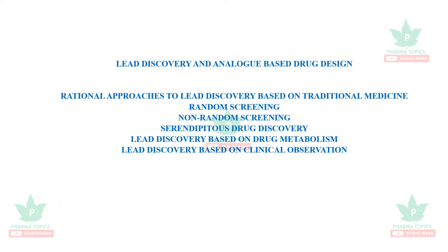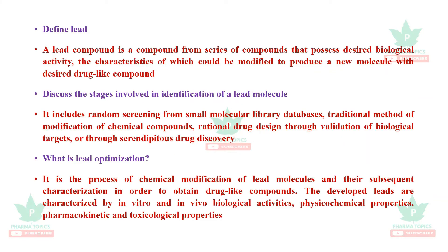The next stage in Unit One is lead discovery and analog-based drug design. This involves subdivisions such as rational approaches to lead discovery, traditional medicine, random screening, non-random screening, serendipitous drug discovery, lead discovery based on drug metabolism, and lead discovery based on clinical observation. First, what is a lead compound?